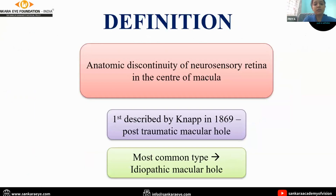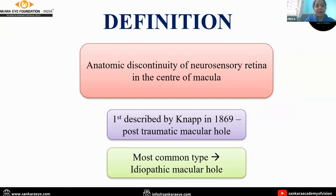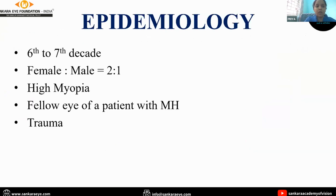Macular hole is an anatomic discontinuity of neurosensory retina in the center of the macula. It was first described by Knapp in 1869 in a post-traumatic macular hole. The most common type is idiopathic macular hole, most common in the 6th to 7th decade of life, and commoner in females than males.